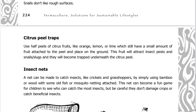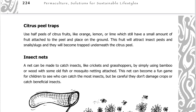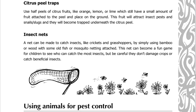Citrus peel traps: use half peels of citrus fruits like orange, lemon, or lime which still have a small amount of fruit attached to the peel, and place on the ground. This fruit will attract insect pests and snails and slugs, which will become trapped underneath the citrus peel. Insect nets: a net can be made to catch insects like crickets and grasshoppers by simply using bamboo or wood with some old fish or mosquito netting attached. This net can become a fun game for children to see who can catch the most insects, but be careful they don't damage crops or catch beneficial insects.